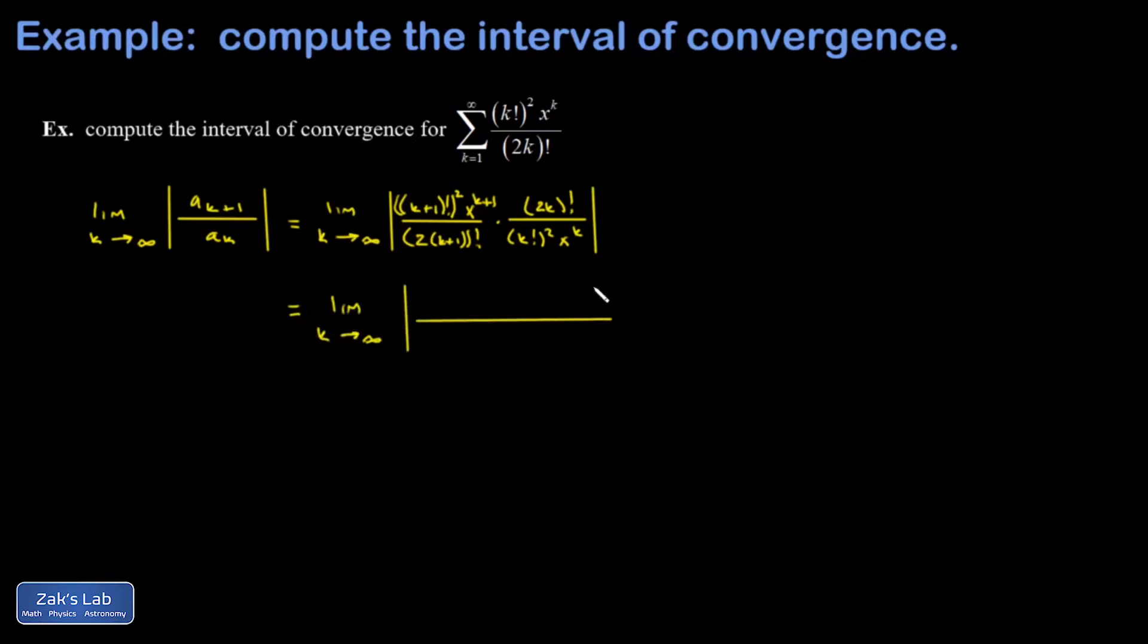We're going to use some pretty standard tricks along the way here. The main thing is just being comfortable splitting terms out of factorial expressions. So k+1 factorial up here can be written as k+1 times k factorial, just splitting off the first term of the factorial. That's all going to be squared.